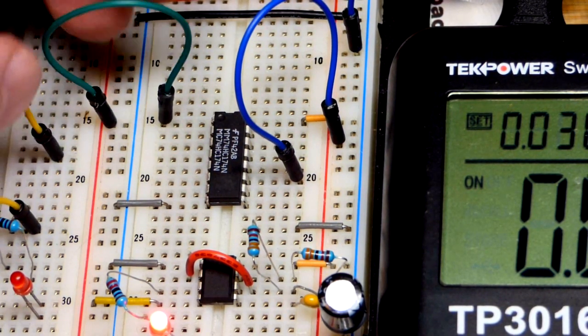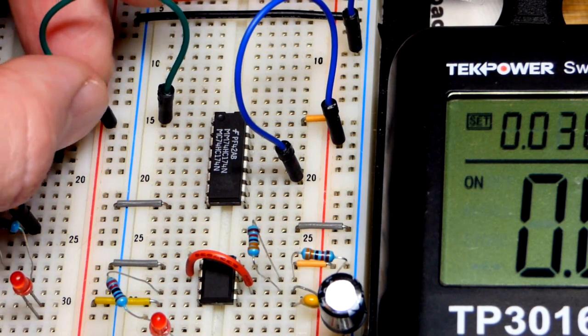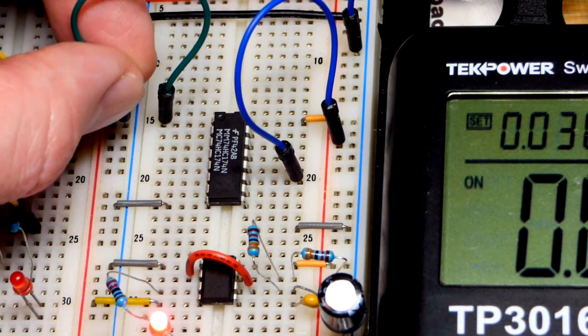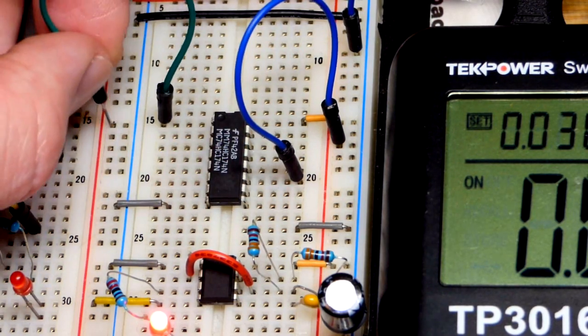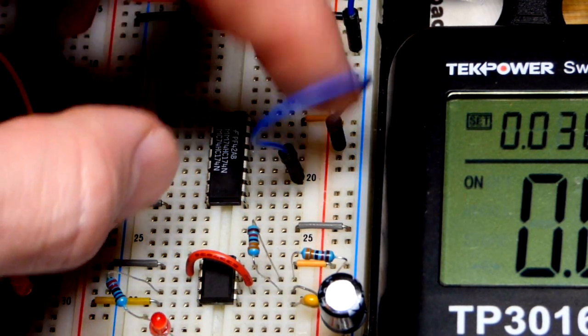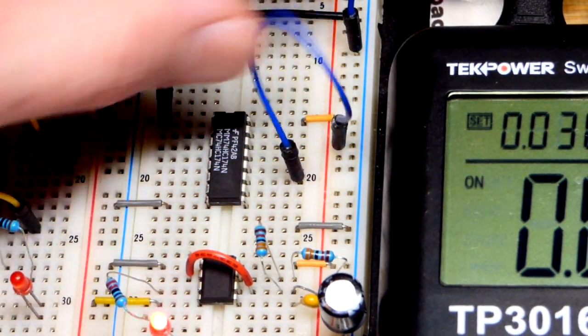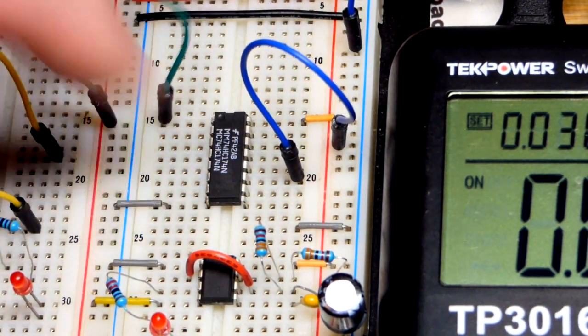We have a clear pin right there. This overpowers whatever we're doing if we set it low. In fact, even when it's floating the outputs will be low. We've got to power the integrated circuit—pin 16 goes to the positive rail, pin 8 goes to the negative rail.